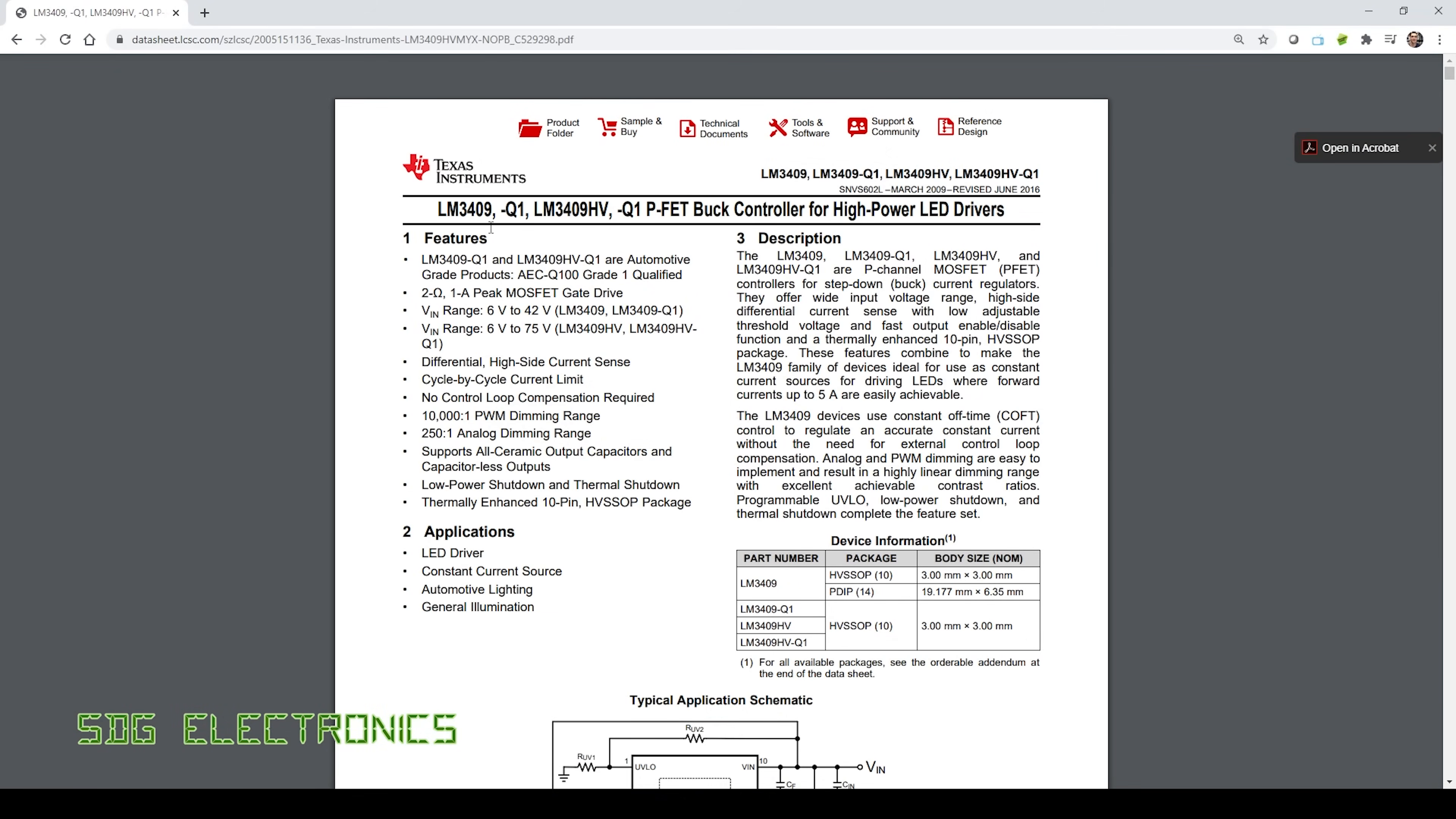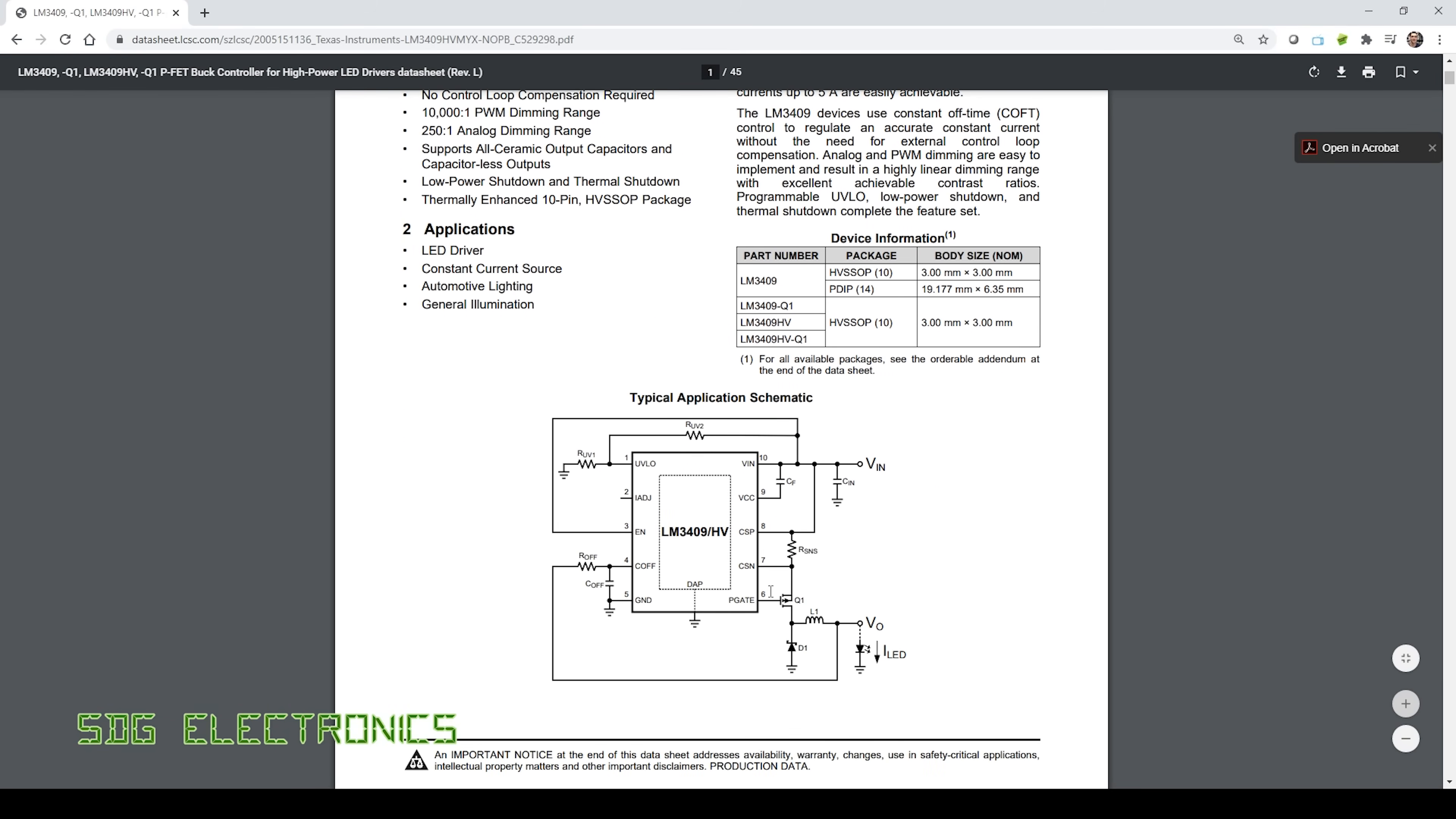So a little bit of detail about the controller. We're using the Texas Instruments LM3409 and it comes in two different versions. The standard with an input voltage range of 6 to 42 volts or you can get the HV version which extends that all the way up to 75 volts. Now this is configured as a buck regulator and it has an integrated gate driver with capability up to one amp. So you can choose the specifics of your MOSFET so that you can drive basically any LED in buck configuration that you like.